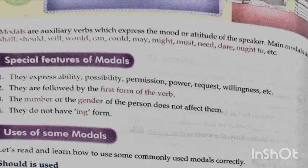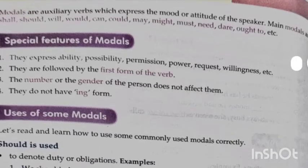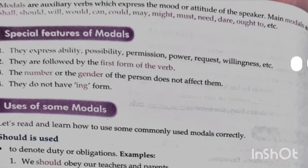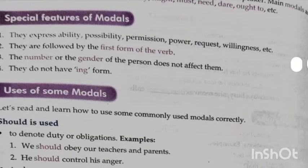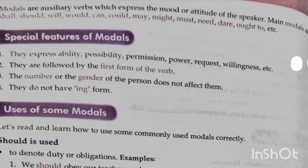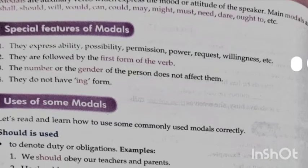Modals are followed by the verb's first form, and their number and gender don't affect them. Primary auxiliaries depend on number and gender — for example, was/were, he/she — but can, could, shall, should, may, and might do not depend on them. They also have no -ing form.